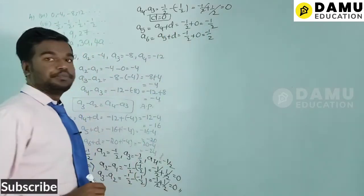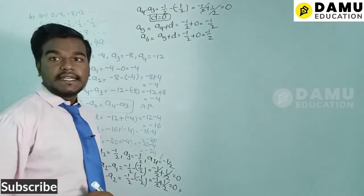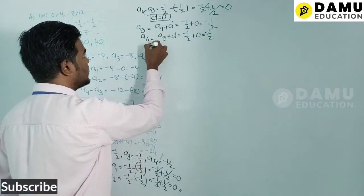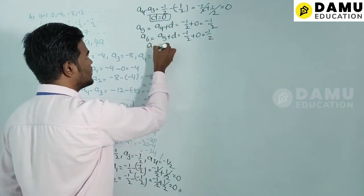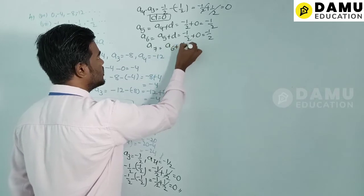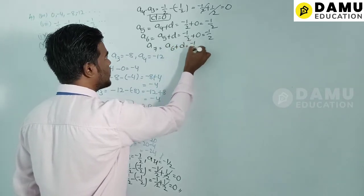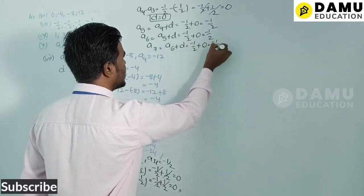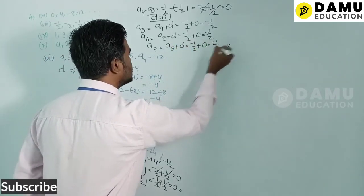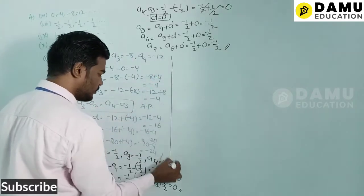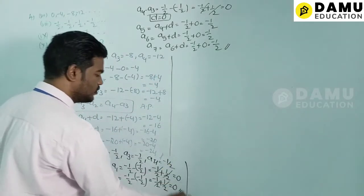Then a7 = a6 + d = −1/2 + 0 = −1/2. The three more terms are all −1/2.